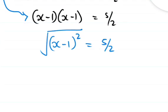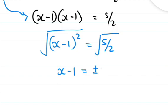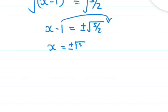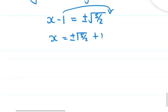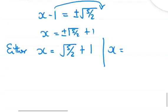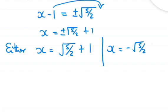We have x minus 1 squared is equal to 5 over 2. Remove the square by taking the square root of both sides. So x minus 1 is equal to plus or minus the square root of 5 over 2. Then x is equal to plus or minus root 5 over 2 plus 1.